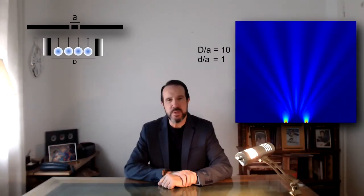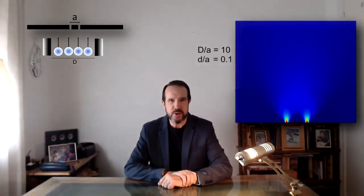When the width of each wave packet is equal to the distance between slits, we see an interference pattern. But when it is ten times smaller, this structure disappears.